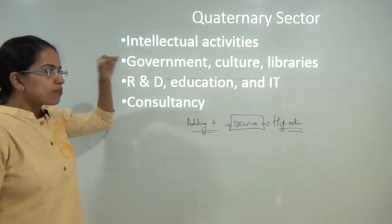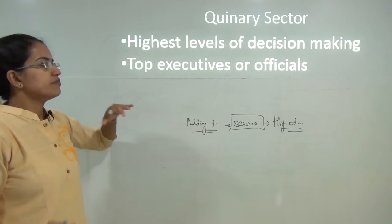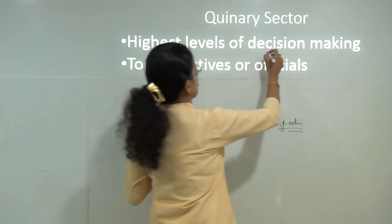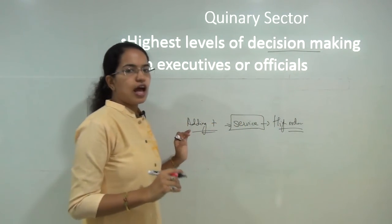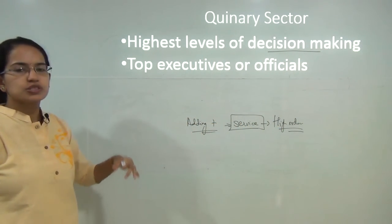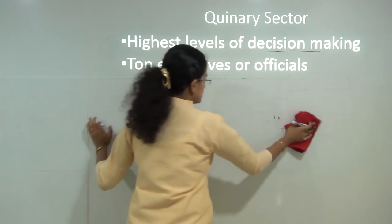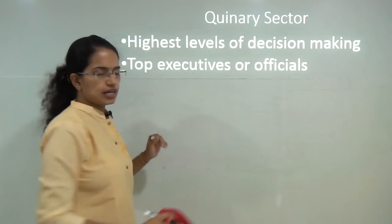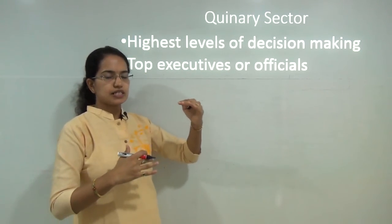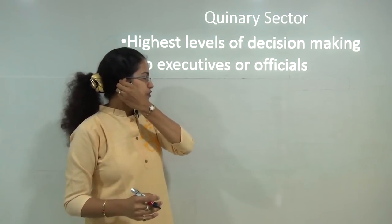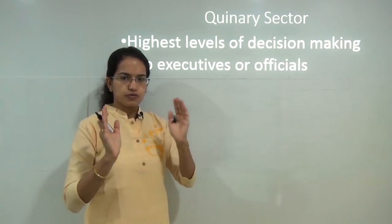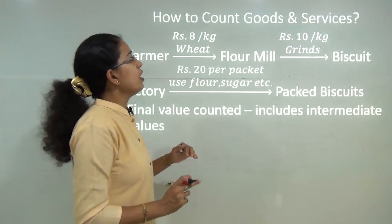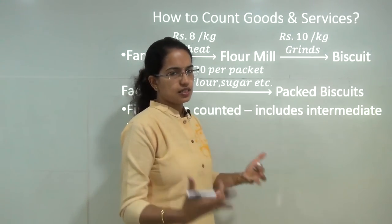Further, the topmost level of services which involves decision-making would be part of the quinary sector, and this predominantly includes the top executives and the top officials. So these are the 5 sectors that we talk about. However, under NCRT, we have broadly classified these under 3 sectors. For the remaining lecture, we will work with those 3 sectors as the predominant basis. Now, how do we count goods and services? This is a very important concept to understand.